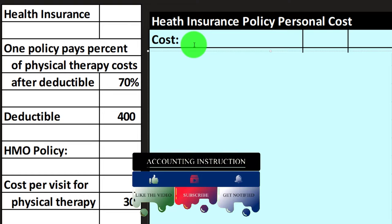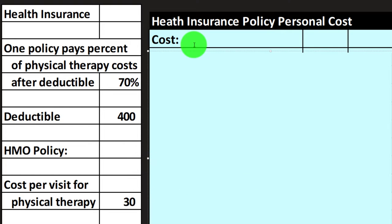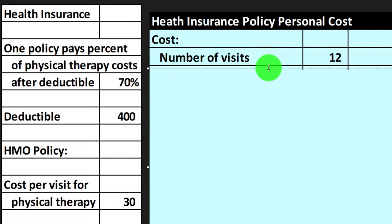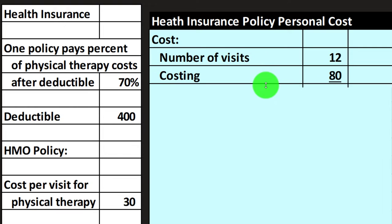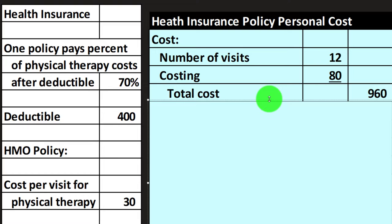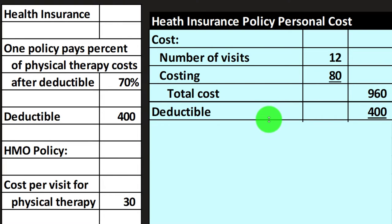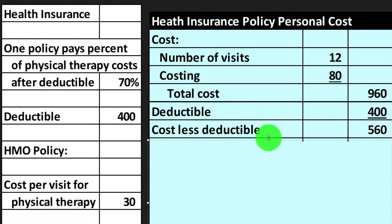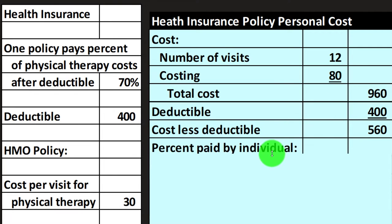So let's build the health insurance policy comparison table — it's always good practice to put this together, ideally in Excel to practice your tables. Number of visits: 12. Cost per visit: $80. That gives a total cost of $960. There is a deductible on this first policy, so we need to clear the deductible before the insurance kicks in. We put the $400 deductible here, which leaves $560 — that is $960 minus $400 — as the costs over and above the deductible.